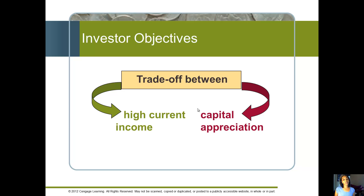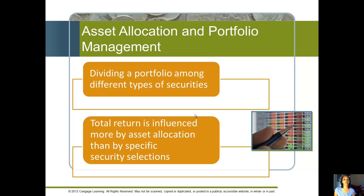Your investor objectives are going to be a trade-off between earning high current income, which is probably more important to people who aren't earning wages, and capital appreciation — just seeing the value of your investments grow over time. Asset allocation means allocating your funds between stocks, bonds, cash, and other securities, given the risk and return trade-off of those different choices.